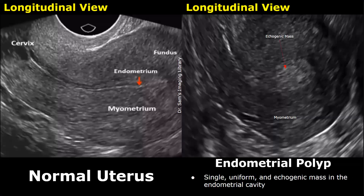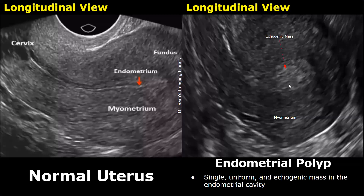The image on the left is of a normal uterus — this is a transvaginal image in longitudinal plane — and the image on the right is of a polyp. A polyp can appear as a single homogeneous hyperechoic mass in the endometrial cavity.